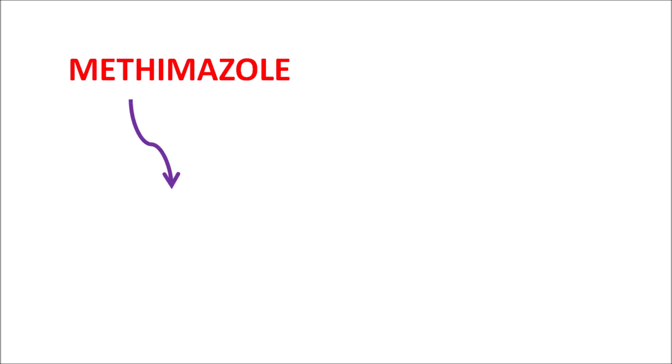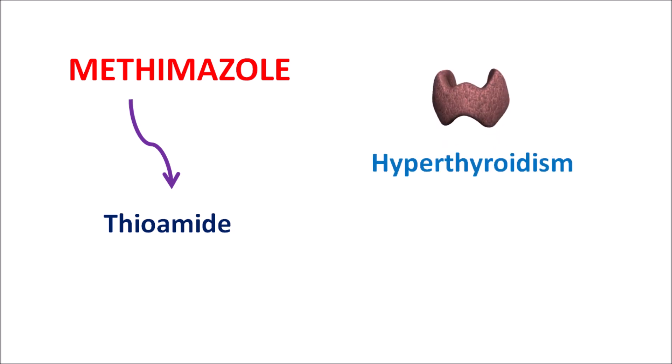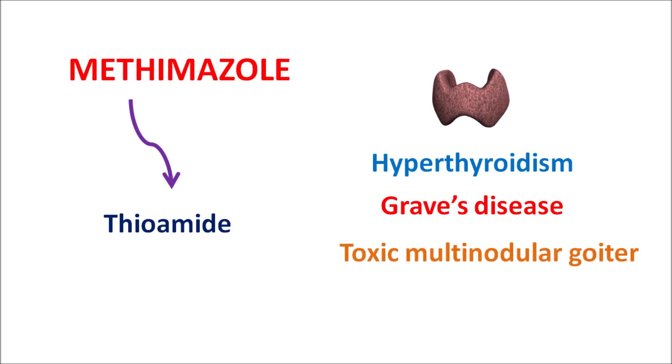Today we will discuss the drug methimazole. Methimazole is classified as a thioamide and acts as an anti-thyroid agent. Therefore, methimazole can be used in the treatment of hyperthyroidism, where it can control the development of Graves' disease and toxic multinodular goiter.